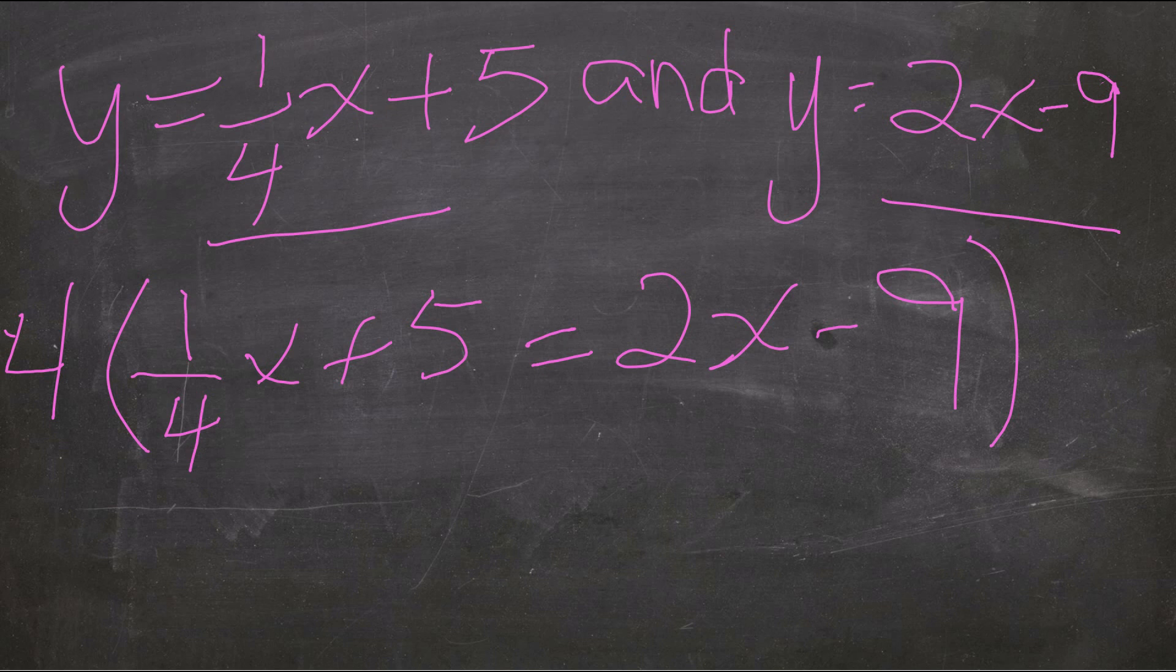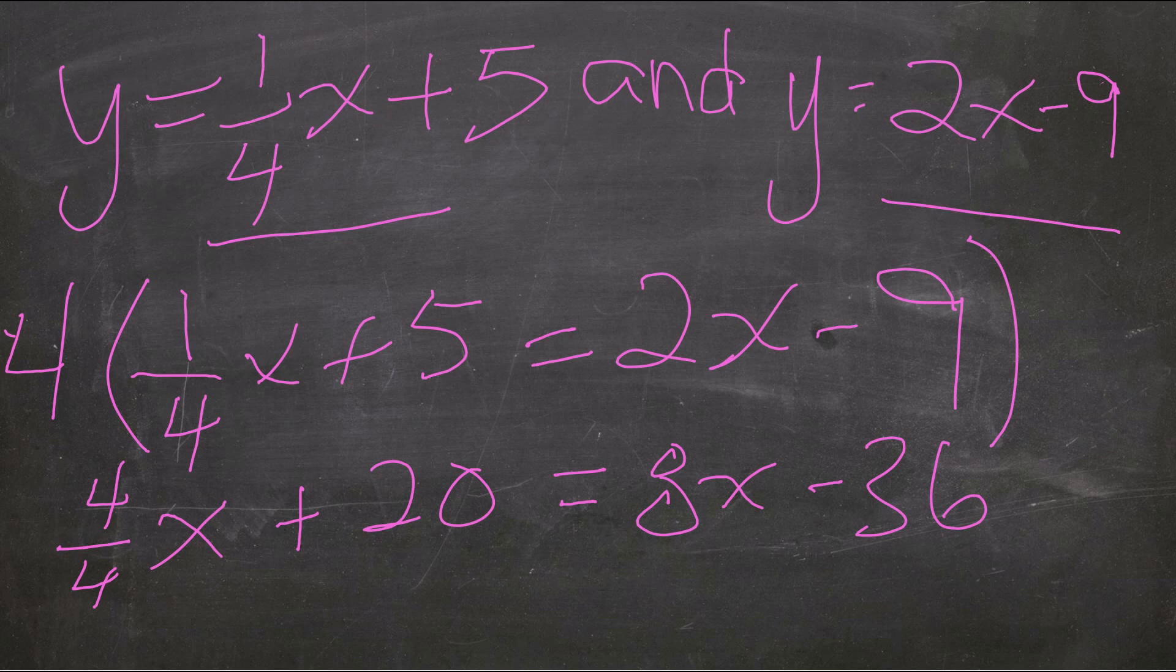So we're going to rewrite this equation by writing an equivalent equation. When I multiply every term by 4, I get 4 over 4x plus 20 because 4 times 5 is 20 equals, we get 8x because 4 times 2x is 8x. And then 4 times 9 is 36. So there is our new equivalent equation.